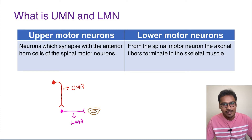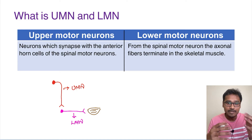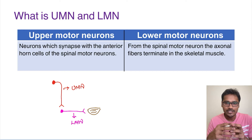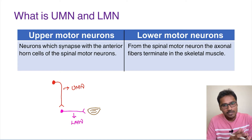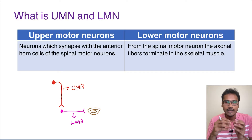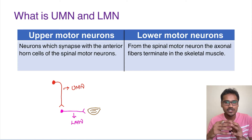Let us understand one simple concept. Upper motor neuron is like a teacher in the class. When the teacher is there, most of the class will be in silent mode — they will be kept under control. Whenever the upper motor neuron is not there, all the lower motor neurons will be performing all their actions on their own. The upper motor neuron has both inhibitory as well as excitatory impulses on the lower motor, but predominantly they are inhibitory, keeping the action of the lower motor neurons under control.